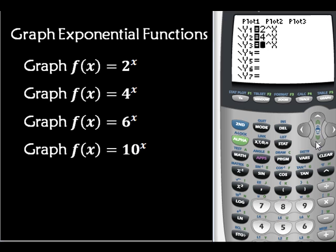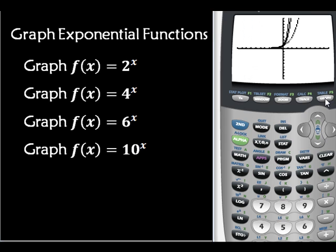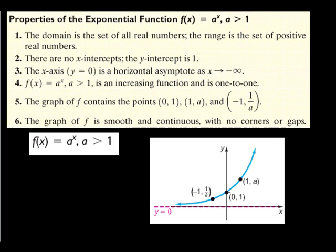Let's do our final one: 10 to the x. And look at that, it's even closer. There's another interesting property that happens right down here, so I'm going to zoom in that window. My window is -5, 5, -5, 5. You'll notice that every graph intersects at (0, 1), and that's true for the exponential functions when they're not transforming anywhere. Over here they don't all start at the same place, but they all intersect at (0, 1).